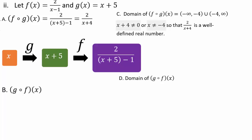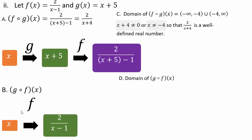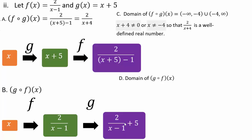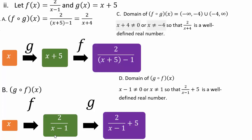For g composite f, f is the starting function: 2 over (x minus 1). That takes the place of x in g, giving 2 over (x minus 1) plus 5. x equals 1 is already excluded from the domain of f. When it enters g, no extra conditions arise. So the domain of g composite f is negative infinity to 1 union 1 to infinity.